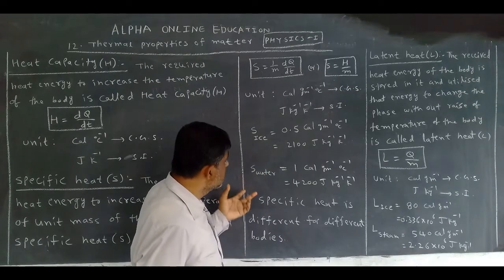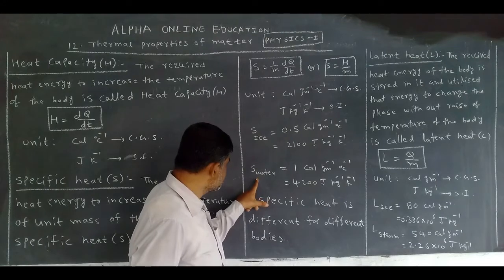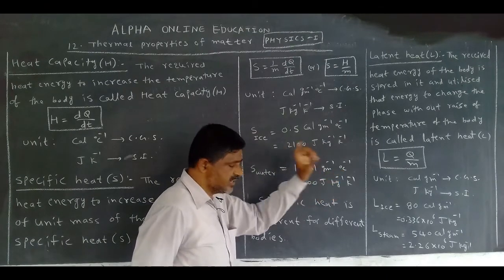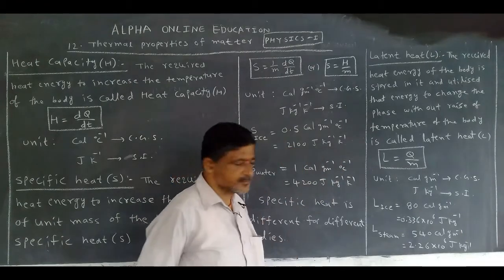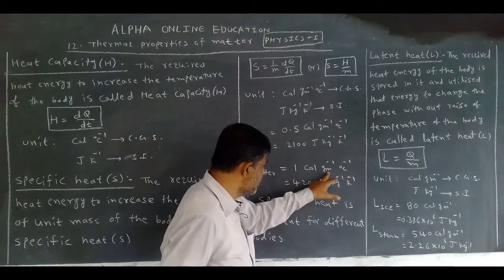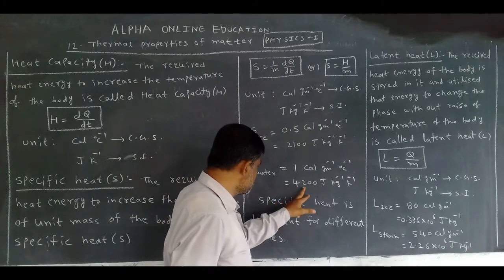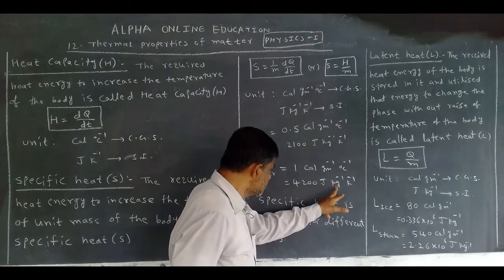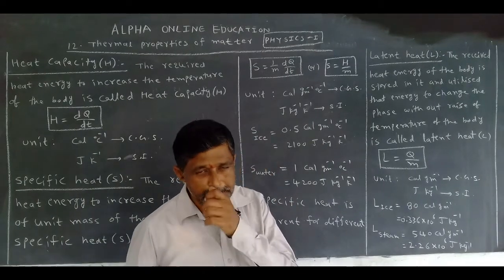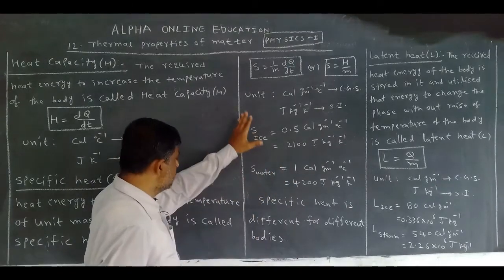The specific heat of water also has constant values. What is the specific heat of water? 1 calorie, gram inverse, centigrade inverse in CGS system. In SI system, 4200 Joule, kg inverse, Kelvin inverse. This is about specific heat.